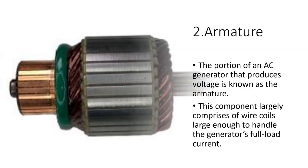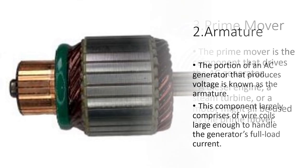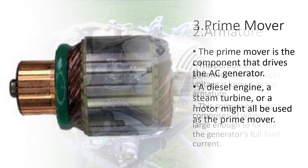Number 2: Armature. The portion of an AC Generator that produces voltage is known as the armature. This component largely comprises wire coils large enough to handle the generator's full load current.